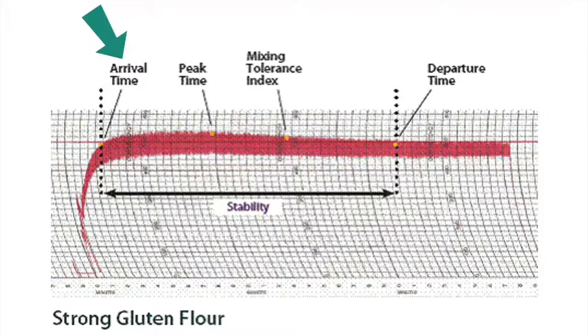The arrival time is the time to the nearest half minute from the first addition of water to the top of the curve, to the first intersection of about 500 Brabender units on the consistent line. That means they adjust the water accordingly — always to get to that 500 line. This is also referred to as the hydration time. They put the water in at 58% to 60% typically, then adjust it to that 500 line so it's always consistent on absorption levels.